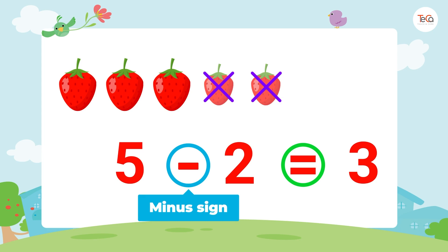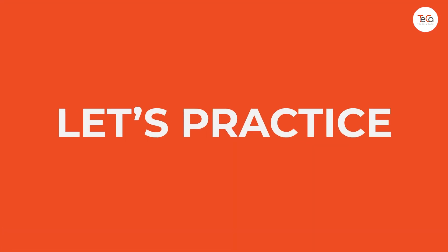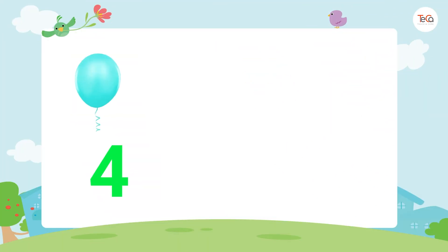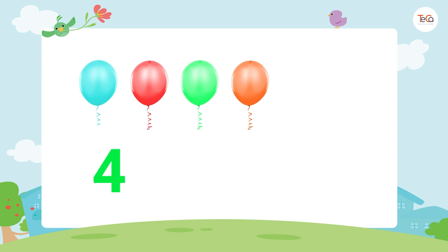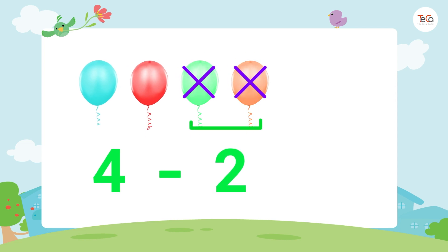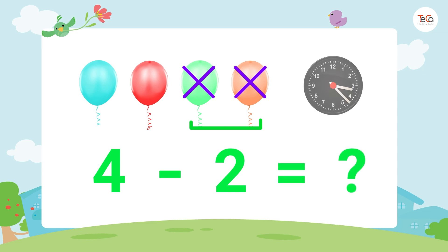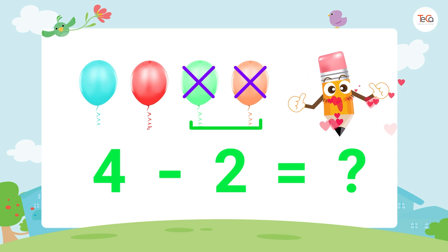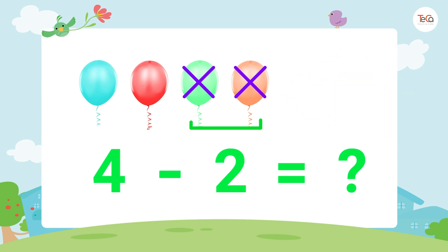Remember, this is the minus sign and this is the equal sign. Now let's practice. Four balloons minus two balloons equals — very good! Here we have one, two balloons. So four minus two equals two.